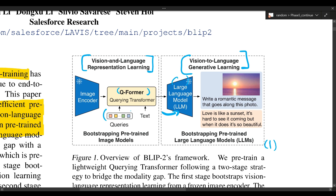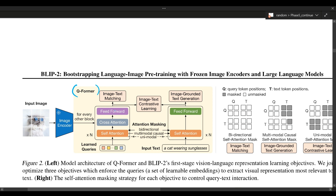The Q-Former is a lightweight transformer composed of learnable query vectors. The purpose of these learnable query vectors is to extract features from the image encoder. You can think of this as an information bottleneck between the frozen image encoder and the frozen large language model. This ensures we can extract the most useful visual features. The final representation from a vision-language model might have a very high dimension, whereas with these queries — 32 queries of dimension 768 — it's going to be much smaller, extracting the most important visual features to feed to the LLM.